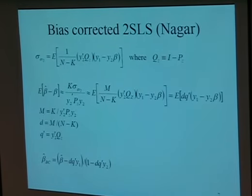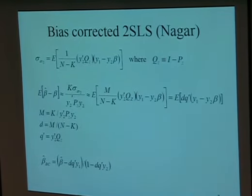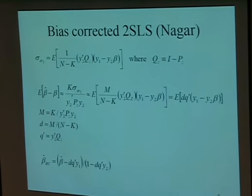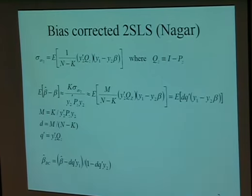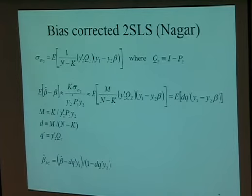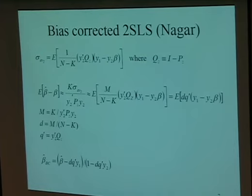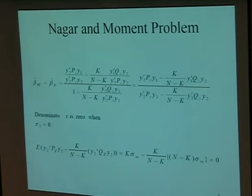The first thing you try to do is get rid of that bias. There is a way, called the Nagar estimator—Nagar is an Indian mathematician. You figure out how to remove the second-order bias term. You take the two-stage least squares estimator and subtract off the bias to get a bias-corrected estimator that is unbiased to second order.